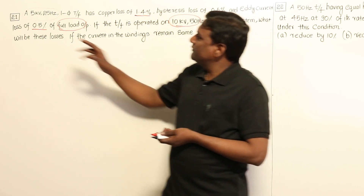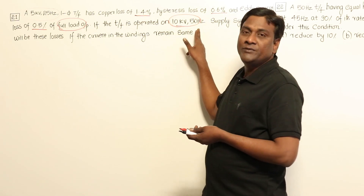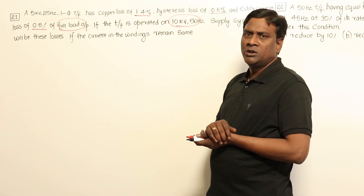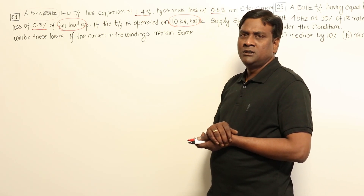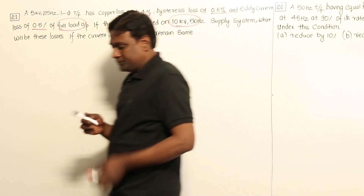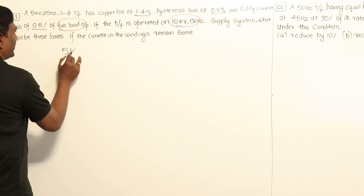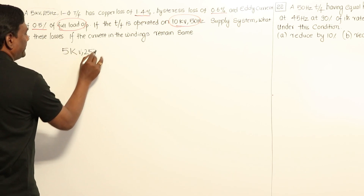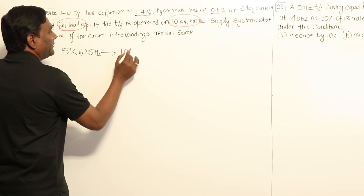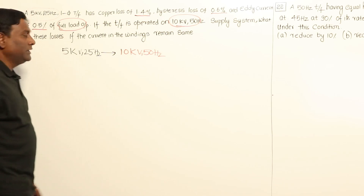Now, a 5kV/25Hz machine is being tested at 10kV/50Hz, meaning the voltage is doubled and the frequency is also doubled. So the V/F ratio remains constant, which means the flux density (Bmax) remains constant. Let us compare the first case at 5kV/25Hz to the second case at 10kV/50Hz.